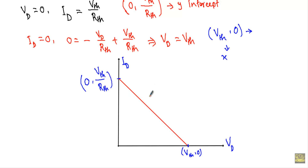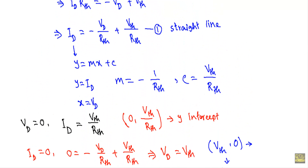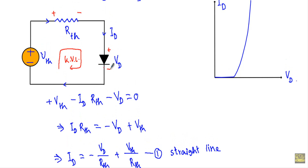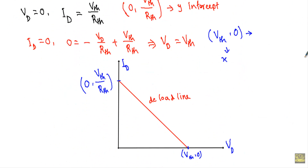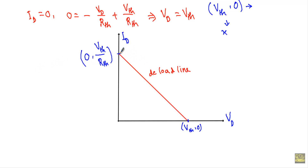In the graph, I will take VD on the x-axis and ID on the y-axis. Placing the x-intercept gives a point at (VTH, 0), and placing the y-intercept gives a point at (0, VTH/RTH). Joining these two points gives a straight line, and this will be our DC load line — obtained by applying KVL in a circuit containing a voltage source, a resistor, and a nonlinear element. The load line has x-intercept at (VTH, 0) and y-intercept at (0, VTH/RTH).